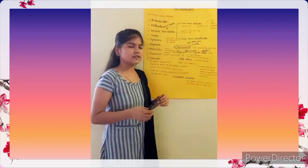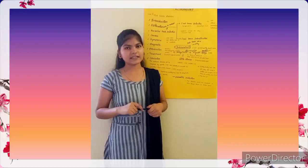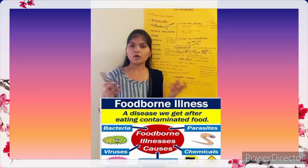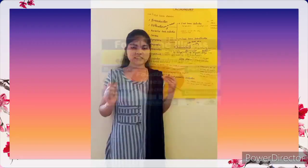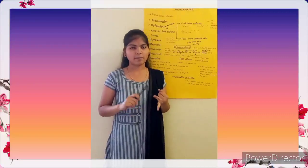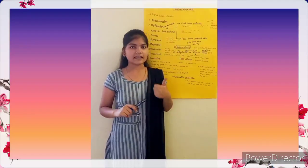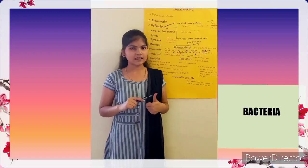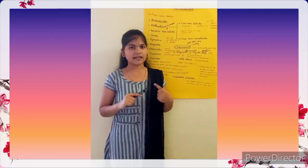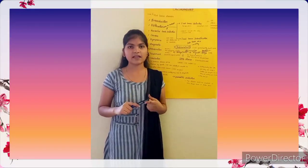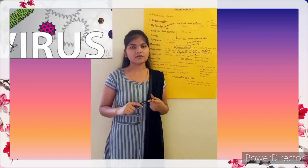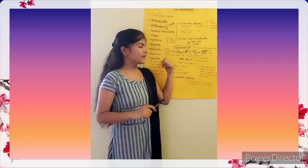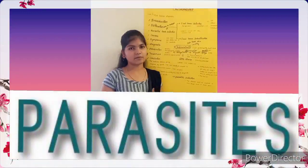If we eat contaminated food, we are affected by diseases. These diseases are caused by parasites, bacteria, and viruses. Examples of bacteria are Salmonella, E. coli, and gastroenteritis. Examples of viral diseases are infectious hepatitis. Examples of parasitic infections are tapeworm infection.